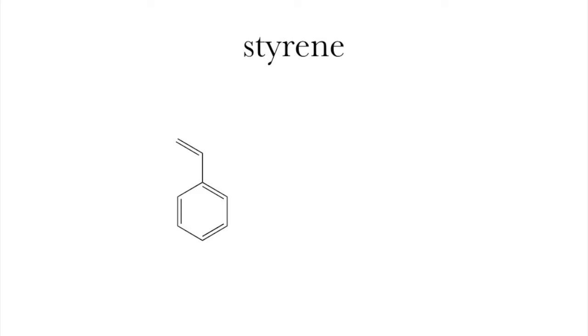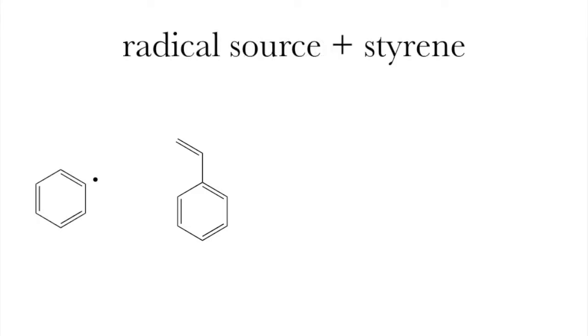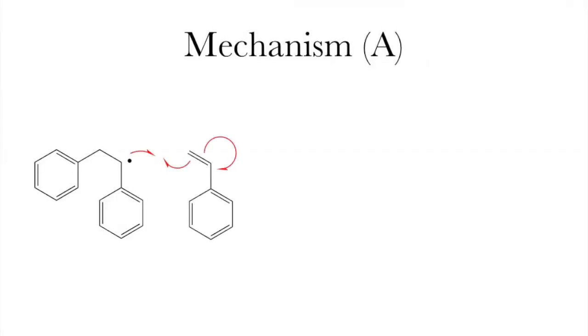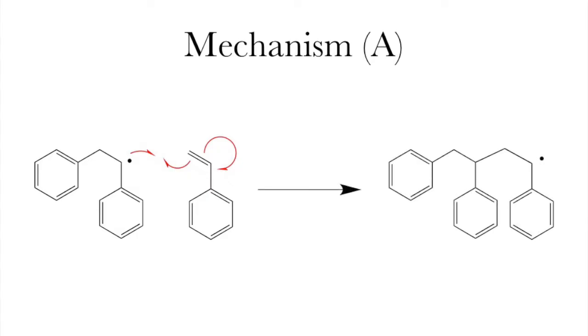Now if we take styrene and we add to it our radical initiator, the radical can reach out and attack the further carbon on the double bond. This pushes another radical, alpha, to the phenyl group. This phenyl group actually helps stabilize that radical so it can go ahead and attack something else, like another styrene, which will then generate another radical. This process could then continue as long as there's still styrene left over.